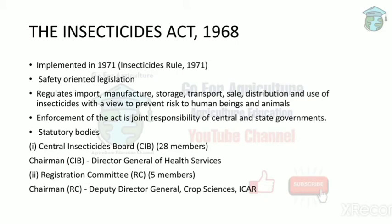Next is the insecticides act. Not only pests — some insecticides also have restrictions on exchange between countries because insecticides are harmful to the environment, humans, and animals. Manufacture, storage, transport, sale, and distribution must be handled with precaution. The Insecticides Act was passed in 1968 and implemented in 1971.